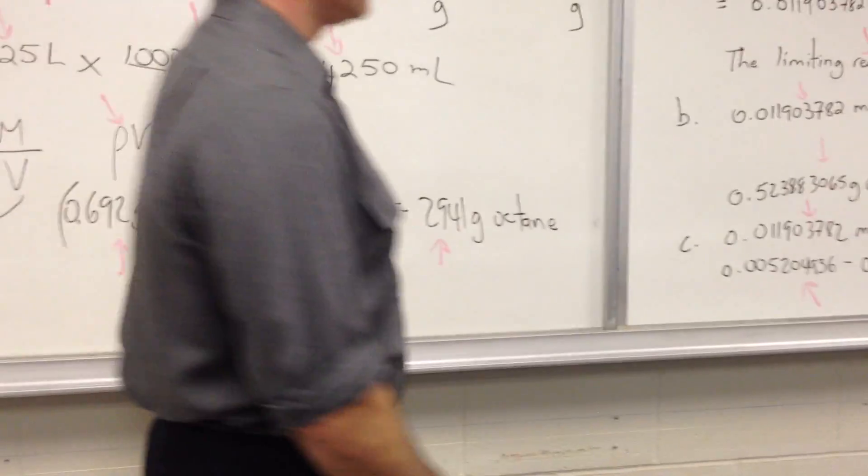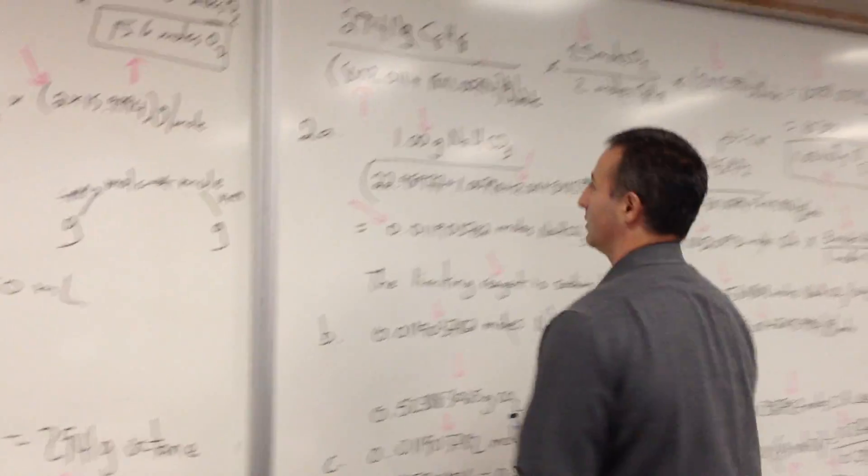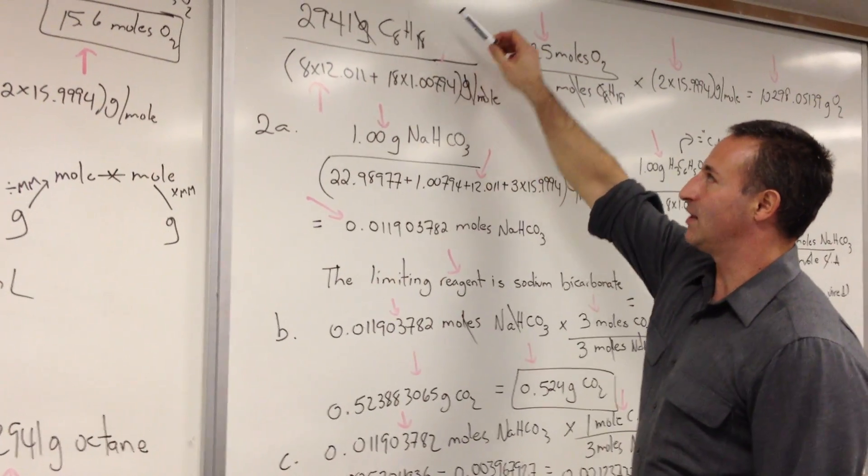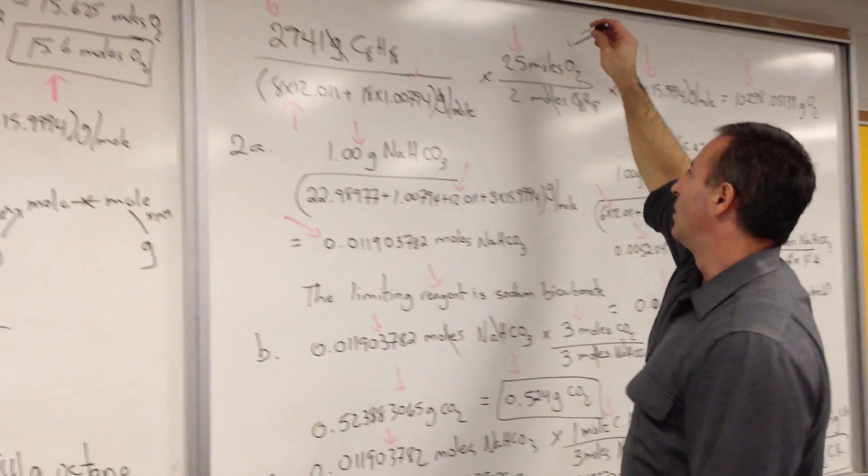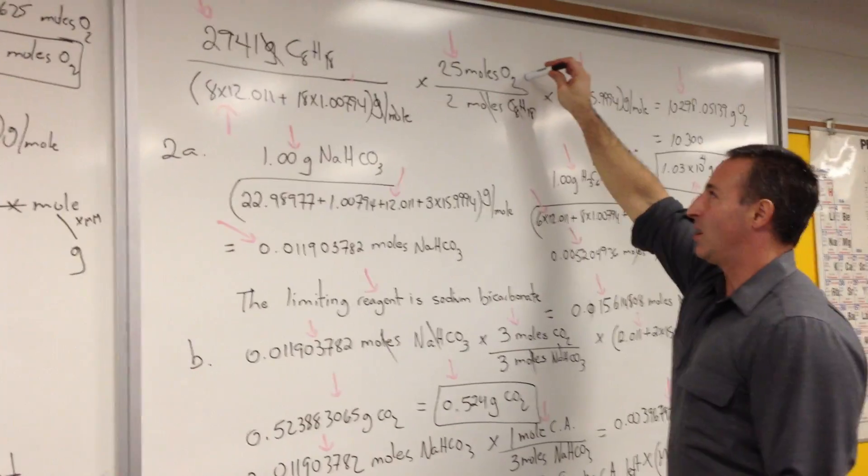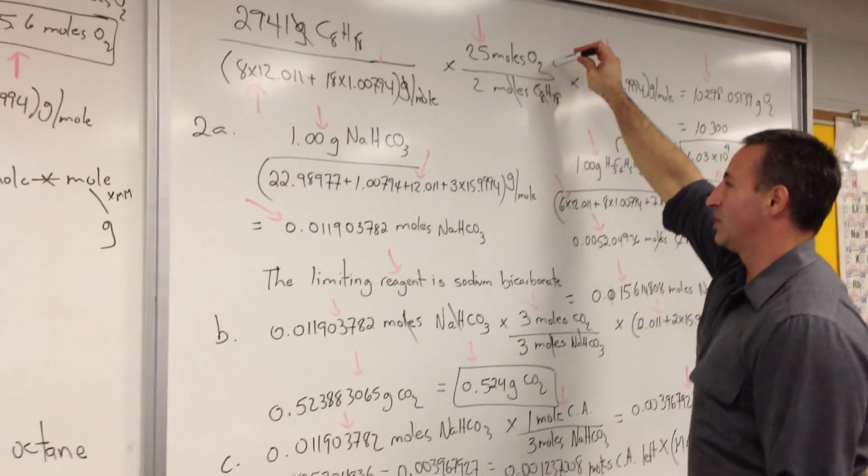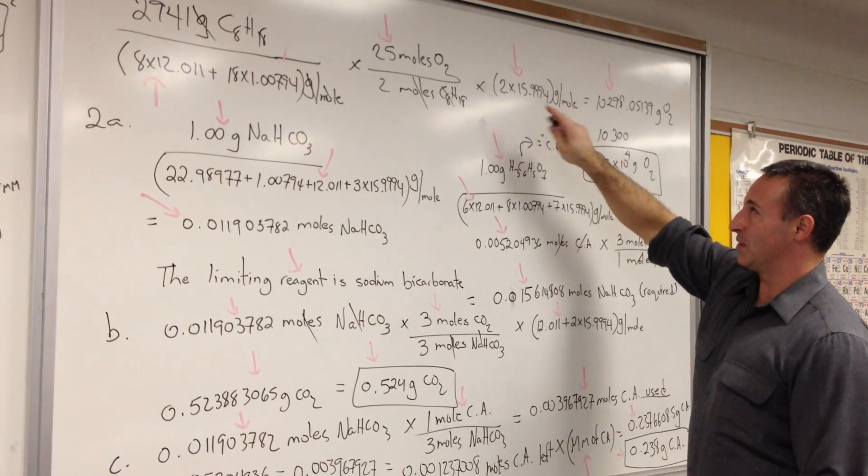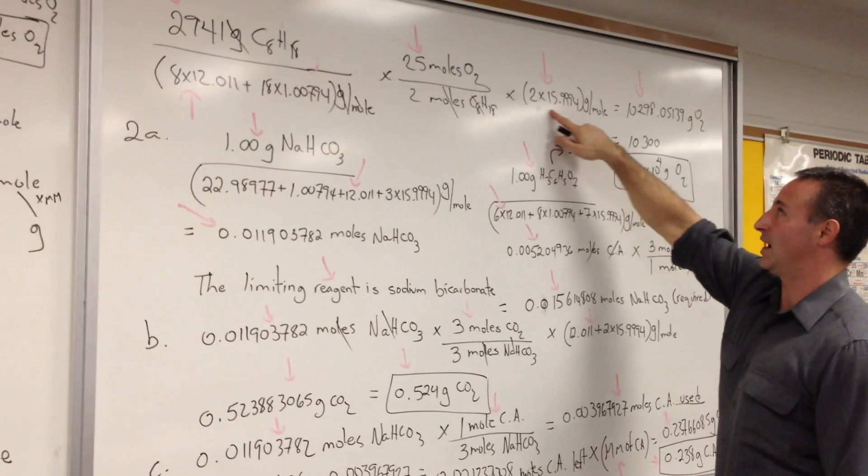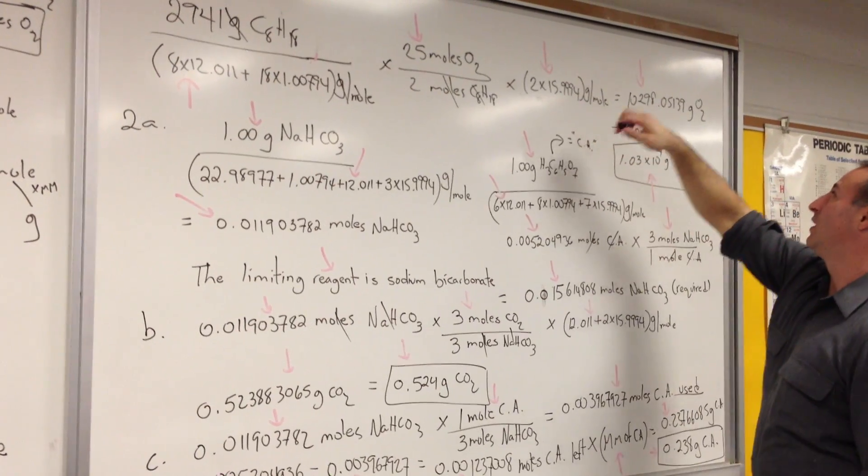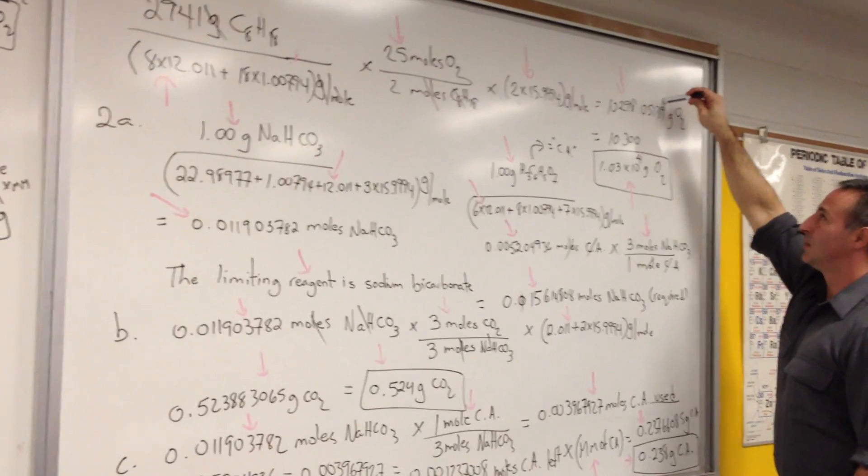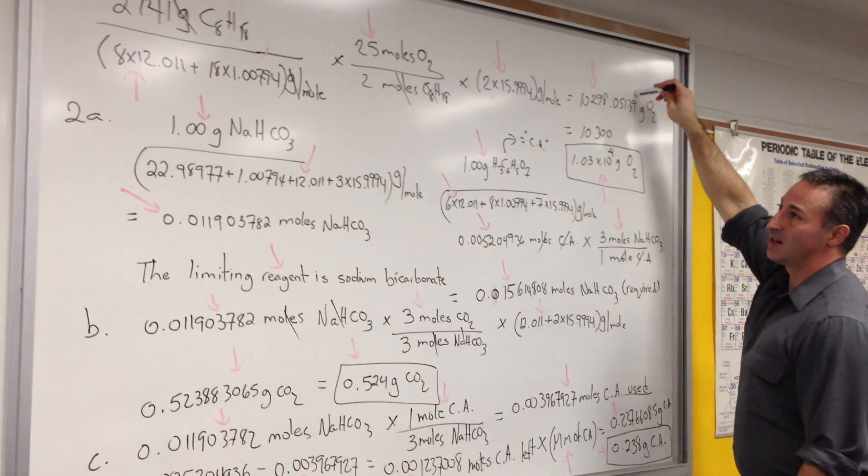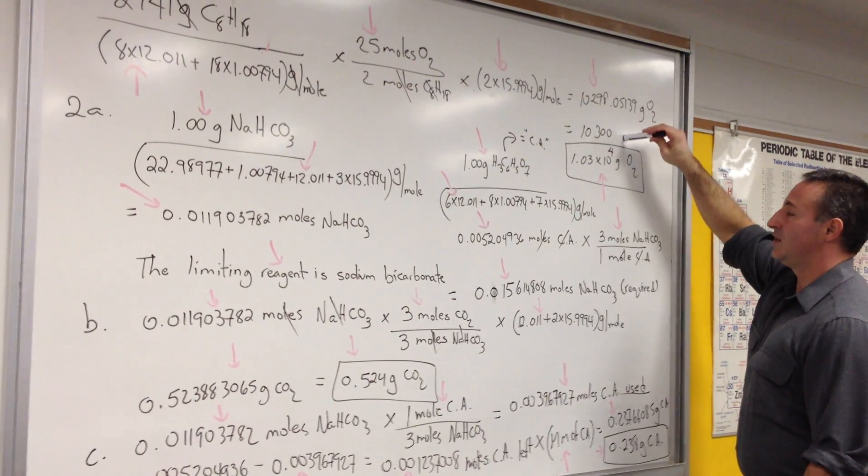From this point, we find the grams of octane, divide by the molar mass of octane to find how many moles of octane. That's the step here. We multiply by the stoichiometry from oxygen, between oxygen and octane, which is 25 to 2. And then we multiply by the molar mass of octane, keeping in mind that oxygen is a diatomic gas. It's 2 times 15.994. You get this answer in your calculator, and you have to report it to three significant figures, which I did here.